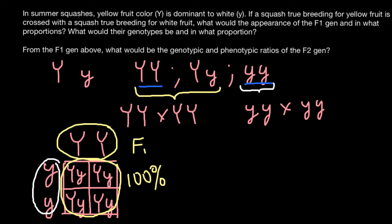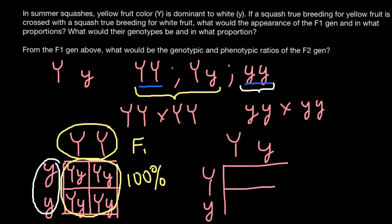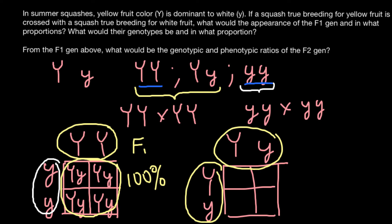To get the F2 generation, we take the F1 parents and cross them. We now have two heterozygous parents, so we build a new Punnett square. Both F1 parents phenotypically produce yellow fruits. The genotypes in this square would be as follows.